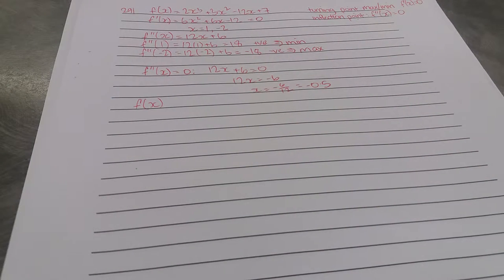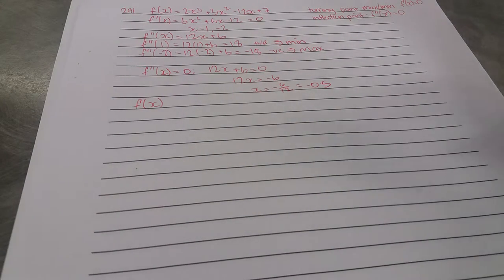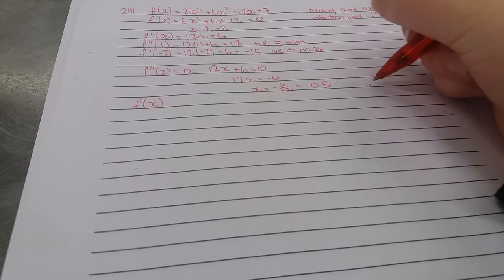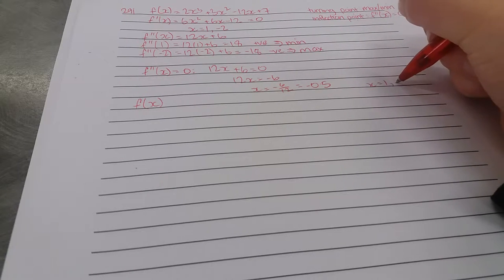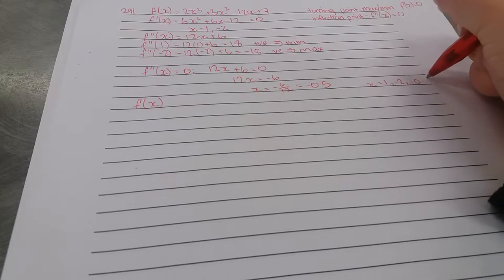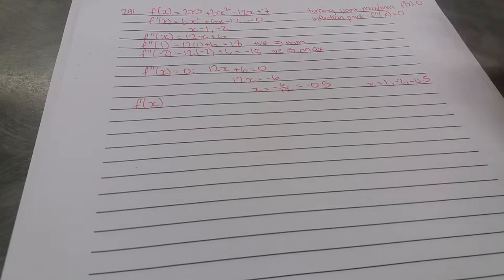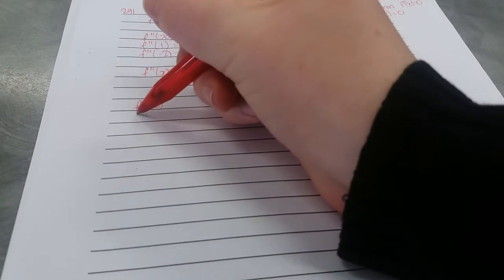We have to go back to f(x). So we've got 3 points: x = 1, -2, and -0.5. We're going to have to substitute all of these in. So we do the first one.